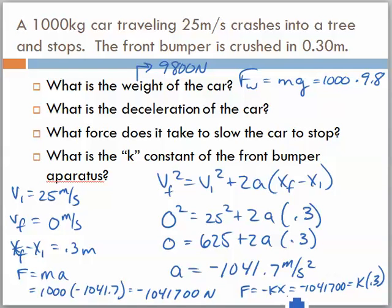K, in this case, turns out to be 3,472,334 newtons per meter. So what we have is an incredibly strong spring here on these front bumpers, where the bumper that absorbed had this type of K constant to it.